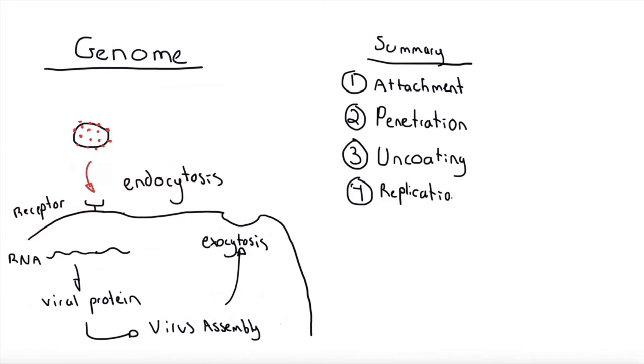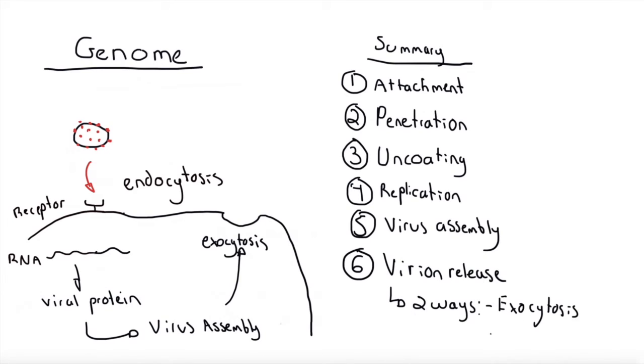Then the viral protein replicates, then the virus assembles, and then the virus either exits the cell by lysis or exocytosis. What is lysis exactly? It's the breakdown of the cell's membrane—this happens because the cell died.